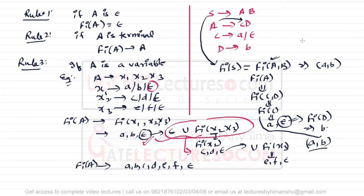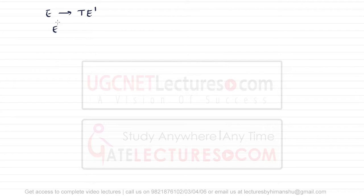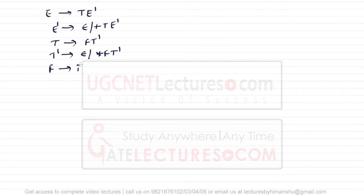Don't worry if you don't understand this — you can find the FIRST of a variable without knowing all of this. This is just explaining the algorithm. Now let's take another example with this grammar: E → TE', E' → epsilon | +TE', T → FT', T' → epsilon | *FT', F → id | (E).